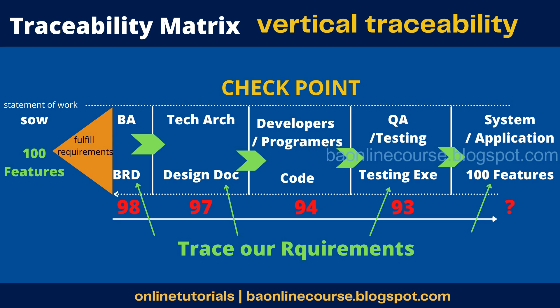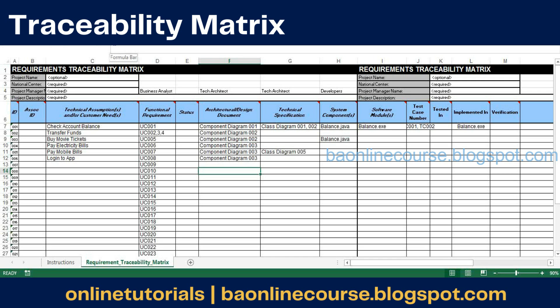The traceability matrix is nothing but an Excel sheet or a Word document with all these details — it has the various teams, all the functionalities, and the hundred features listed in it. You will mark it yes or no: if it's done, you mark it yes. You have to make sure that all of them are translated to the next phase. It's a joint exercise — you will contribute during the requirements phase, the architect fills in after design is completed, the tech lead fills in after programming is completed, and the QA team fills in after testing is completed. That way, you can be pretty much sure that when you deliver to the customer, they are getting hundred percent of requirements without missing any.